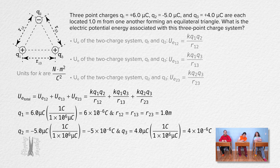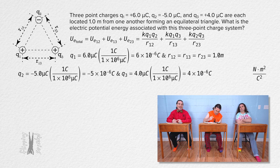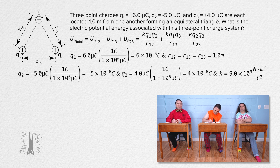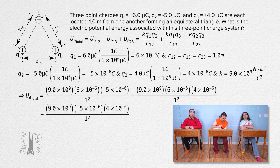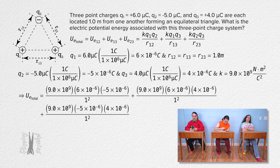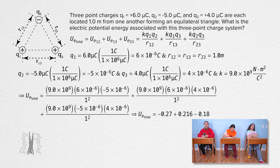The Coulomb constant equals 9.0×10⁹ N·m²/C². Substituting all numbers into the total electric potential energy equation gives −0.27 + 0.216 − 0.18, which equals −0.234, or −0.23 joules to 2 significant figures.